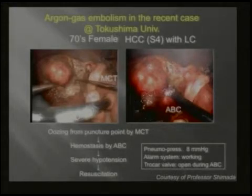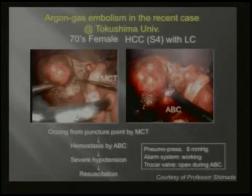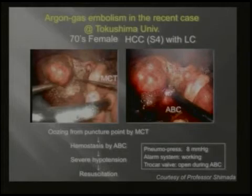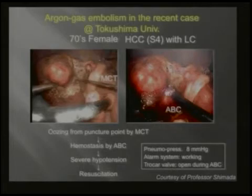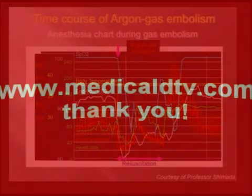Another case Professor Shimada provided happened at Tokushima University — a more recent case. The patient had a cirrhotic liver with hepatocellular carcinoma. They used microwave coagulation before resection, and bleeding came from the needle insertion site. They then used the argon beam coagulator — the needle had likely injured the hepatic vein, allowing argon gas to enter. The patient developed severe hypotension with near cardiac arrest; pneumatic pressure was 8 mmHg and the alarm system activated. Notably, the trocar valve was open when they used the argon beam coagulator, and the embolism still occurred. This is the hemodynamic chart of that patient.